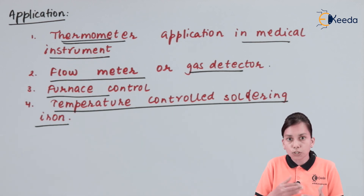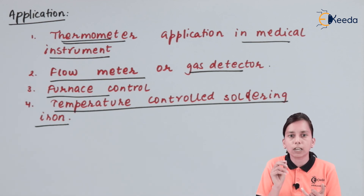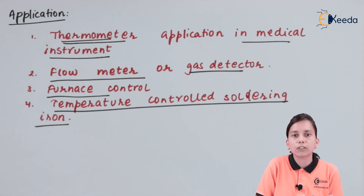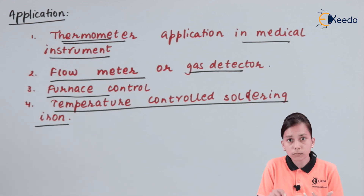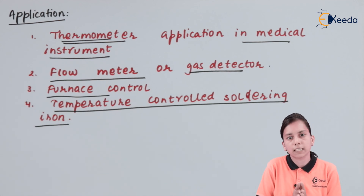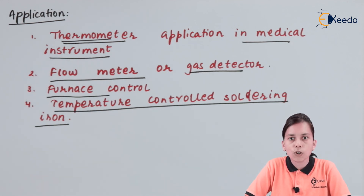So if in an exam they ask you to define the thermistor, first write down the definition of the thermistor, then the basic principle — that it consists of a Negative Temperature Coefficient type of semiconductor — then the basic construction, and then the applications. This is how you define the thermistor. Thank you for watching this video. Stay tuned with Ikeda and subscribe to Ikeda. Thank you.